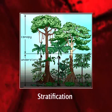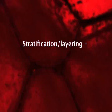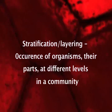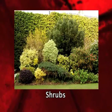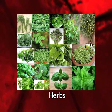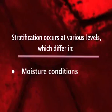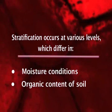Second is stratification. Stratification or layering is the occurrence of organisms or their parts at different levels in a community. Stratification usually occurs because life forms such as trees, shrubs, and herbs differ in their requirements and amplitudes, and therefore grow at various levels which differ in light intensity, temperature, moisture conditions, organic content of the soil, and other factors.